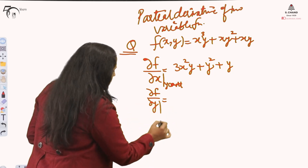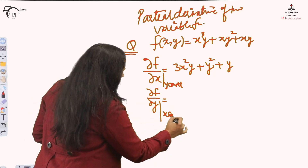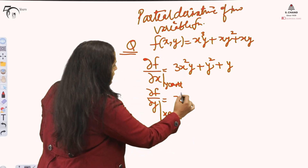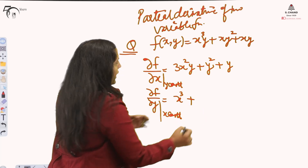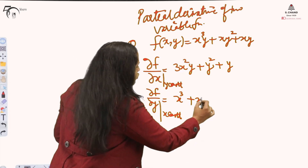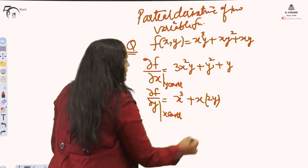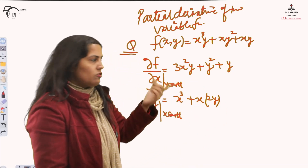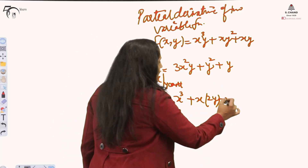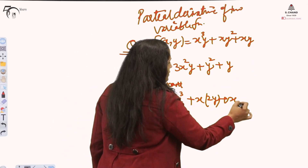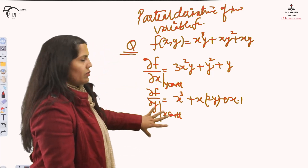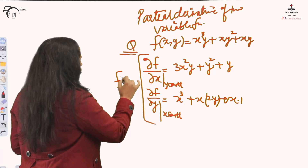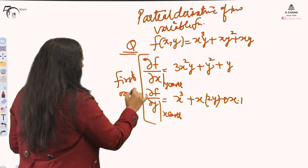Now for del f / del y, we keep x constant. x³ is constant so the derivative of y is 1; x is constant and the derivative of y² is 2y — this is nothing new, we already did this in 12th class; and x is constant with the derivative of y equal to 1. So we have obtained both first-order partial derivatives. You can see the order is 1.